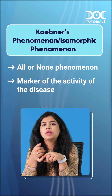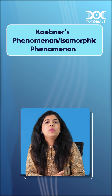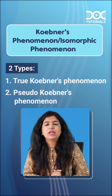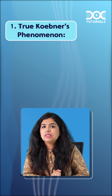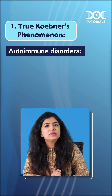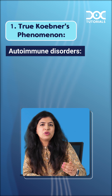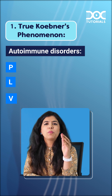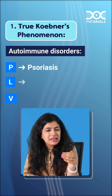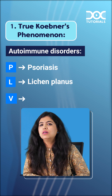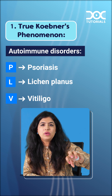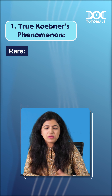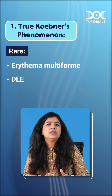Now we have two types of Koebner: the true Koebner phenomenon and the pseudo Koebner phenomenon. The true Koebner phenomenon is seen in autoimmune disorders, which you can remember by a mnemonic: PLV — P is for psoriasis, L is for lichen planus, and V is for vitiligo. These are the autoimmune disorders where you see Koebner.